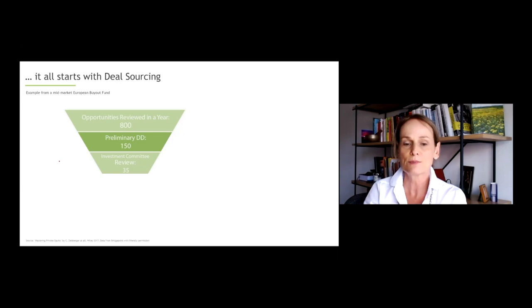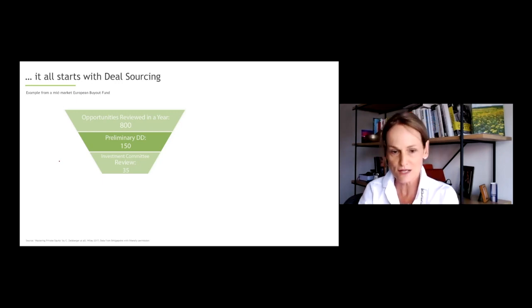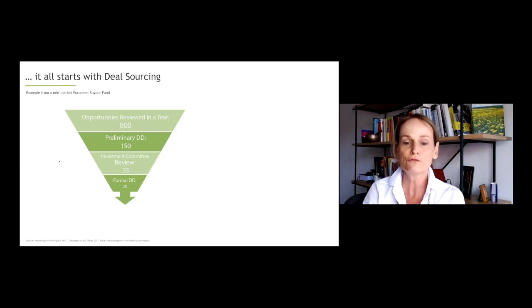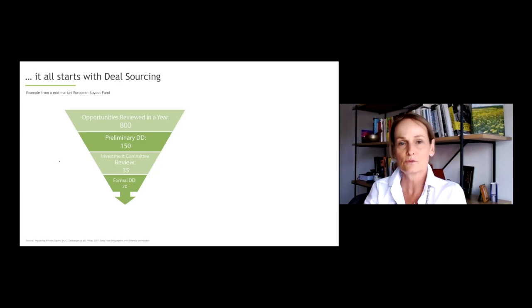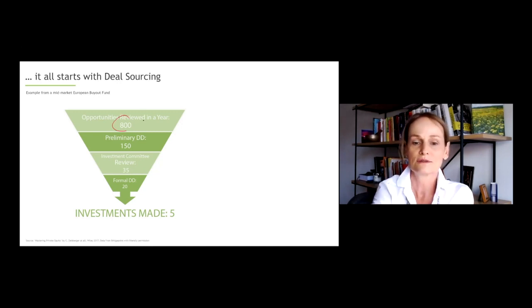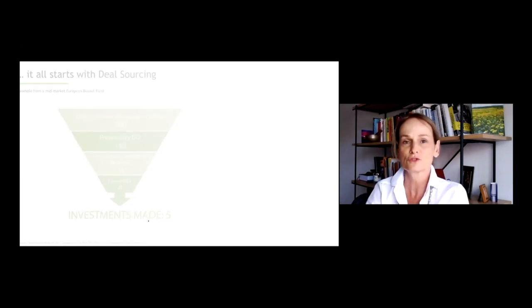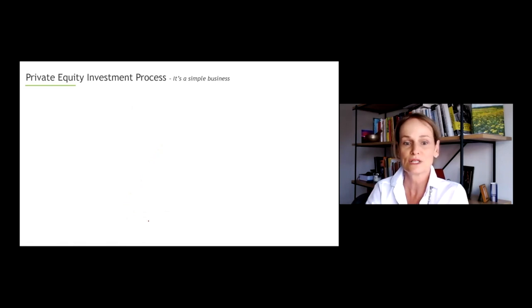They may do preliminary due diligence on 150, so very quickly they will try to narrow it down to suitable investments. Then basically present about 35 of those investment opportunities to the investment committee, meaning the partners in the fund that make the investment decisions ultimately. And then will do formal due diligence on about 20 investments. So there's quite a funnel that we're seeing.